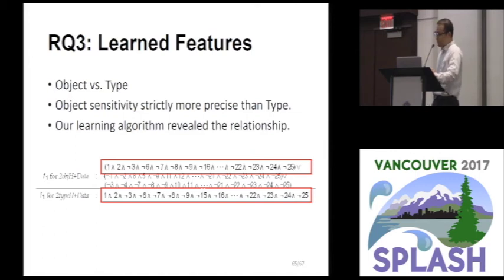Here, we have two F1 formulas from selective two-object sensitivity and two-type sensitivity. As you can see, two highlighted clauses are identical except one additional atom in type sensitivity. Therefore, this one is a subset of this one. This observation is consistent with the relationship between two sensitivities, as I mentioned.